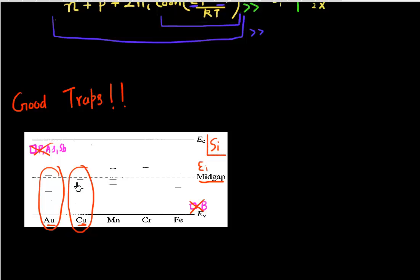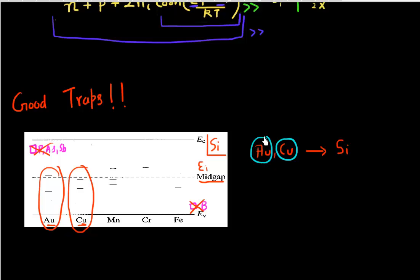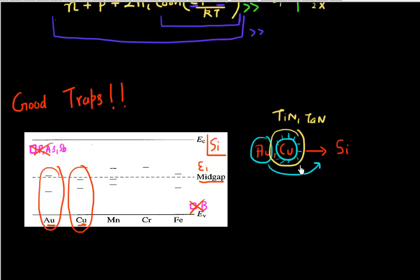If I add a little bit of gold or copper, it will produce a large number of trap states close to the middle of the band gap, and my recombination-generation rate will just increase. That's why a good amount of effort in semiconductor processing is spent on avoiding elements like copper and gold from diffusing into silicon — even a small concentration of these elements will essentially kill your device. So even though copper is widely used in semiconductor chips for making interconnects, it is always surrounded by a barrier of titanium nitride or tantalum nitride, which prevents the copper from reaching into the silicon.